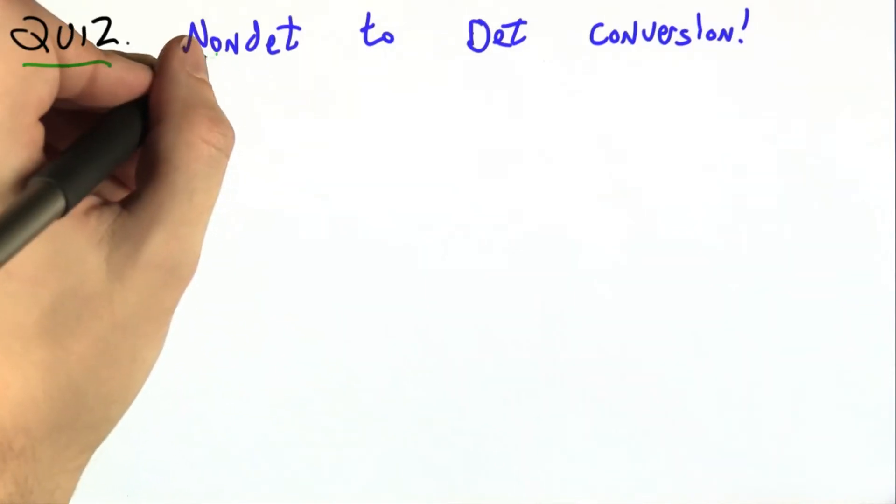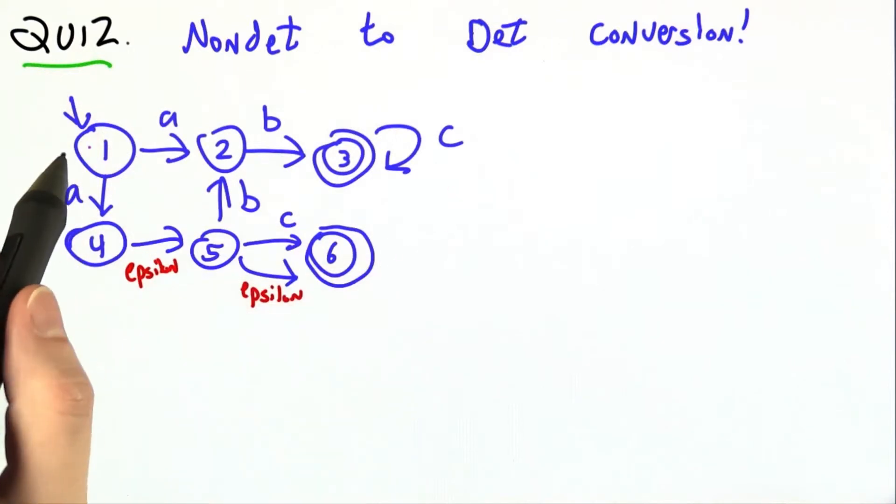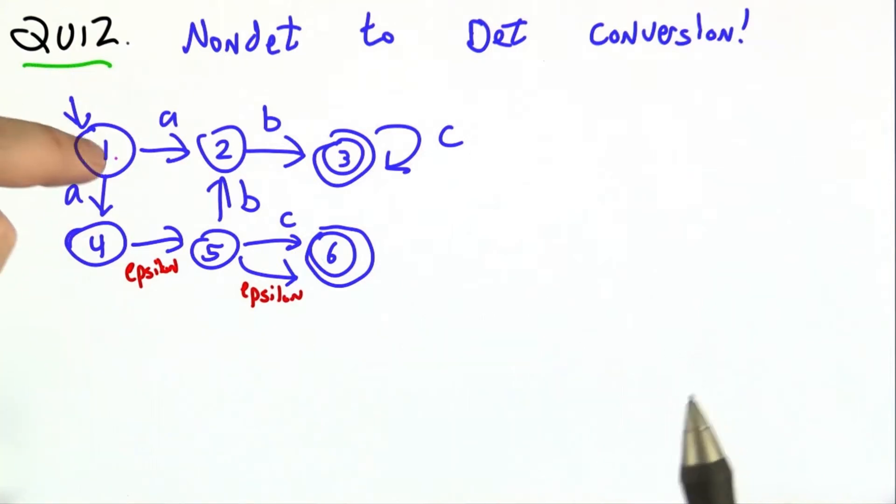So let's do one more bit of practice, converting non-deterministic machines to deterministic ones. Here I've written a non-deterministic machine. It has ambiguity. Right in state 1, there are 2 ways to go on A. It also has epsilon transitions.